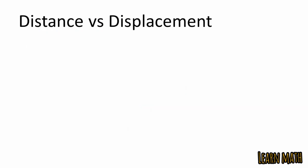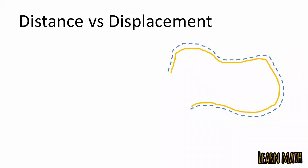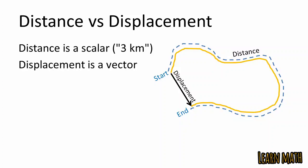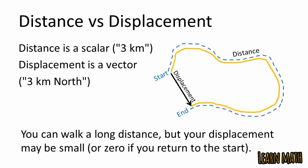The actual path covered by a body is called distance. Look at the graph — the blue line represents distance. The shortest distance between two points is called displacement. The starting point and the end point — the shortest distance between these two points is displacement. Distance is a scalar quantity and displacement is a vector quantity. Displacement may be zero if you return to the starting point, but distance cannot be zero.